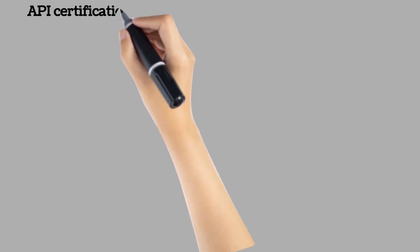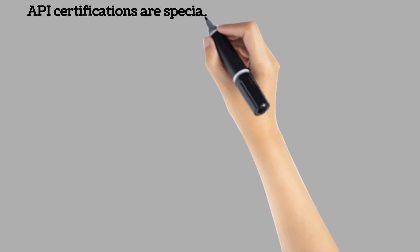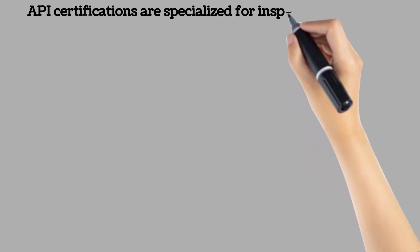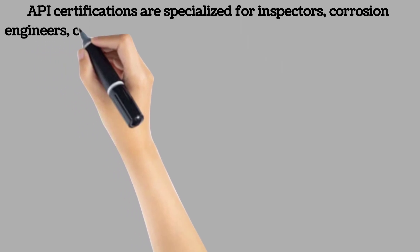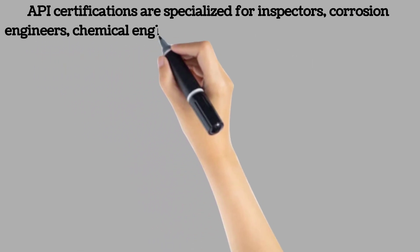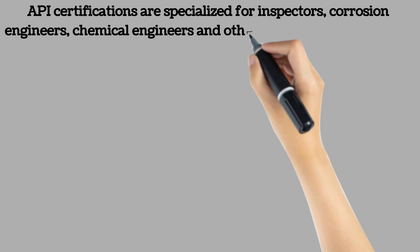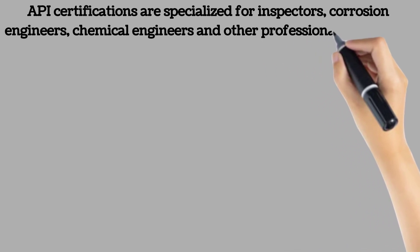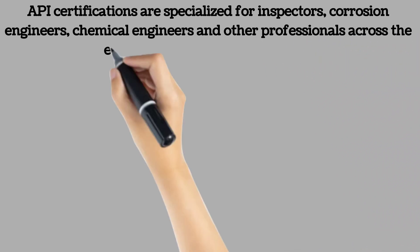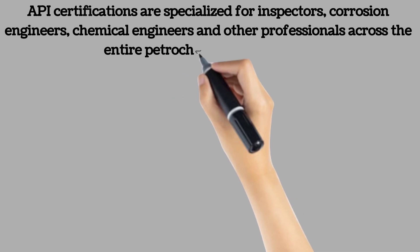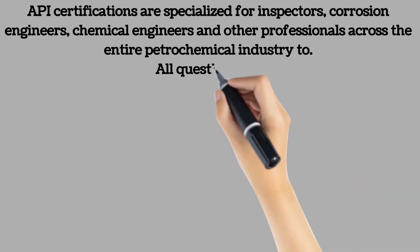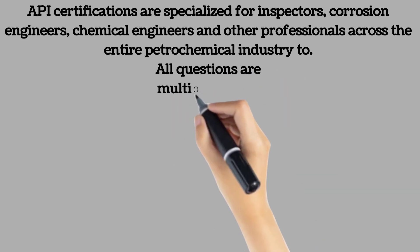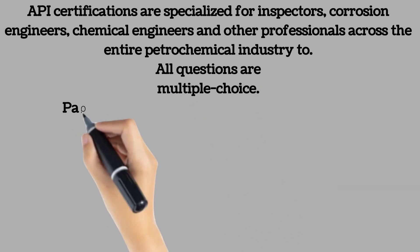API welcomes highly specialized inspectors, inspection and design engineers, corrosion engineers, and chemical as well as process engineers. It also involves other professionals across the entire petrochemical industry to obtain the API 653 above-ground storage tank inspector certification as a validation of their profound knowledge of various tank-related inspections. All questions are multiple-choice.